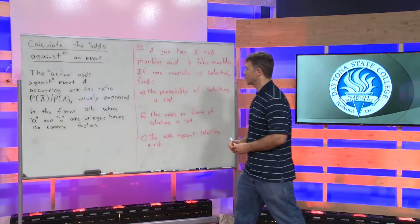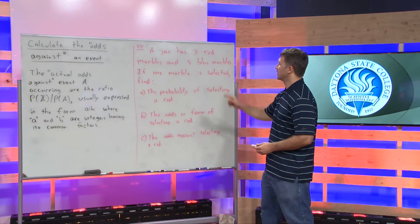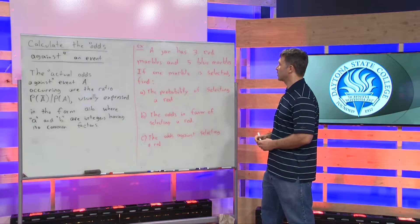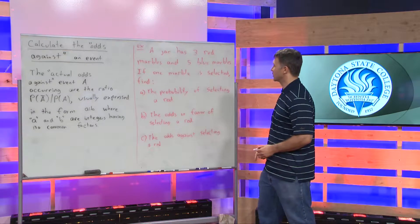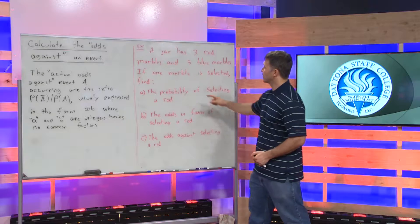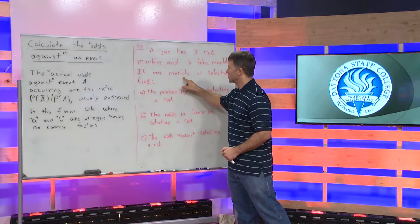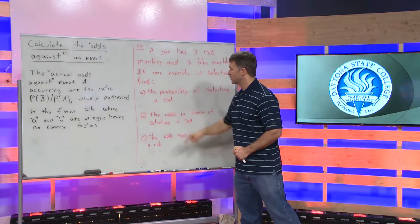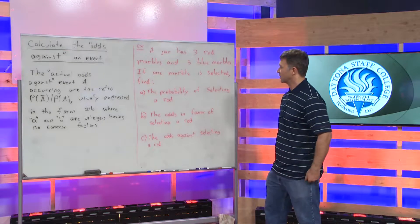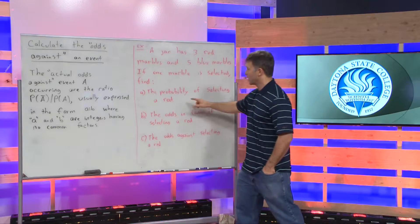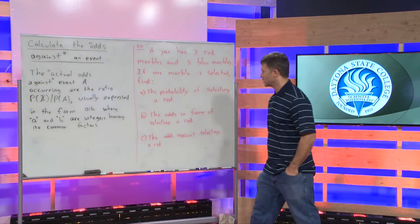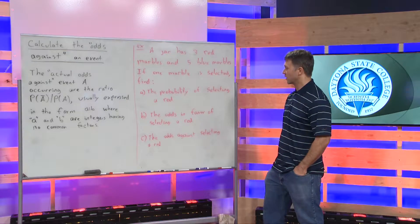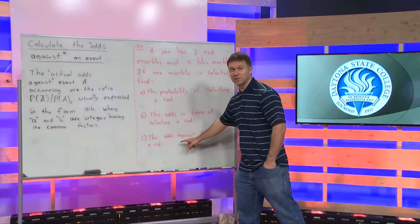Here's our example. A jar has three red marbles and five blue marbles. If one marble is randomly selected, find: the probability of selecting a red, the odds in favor of selecting red, and the odds against selecting red.